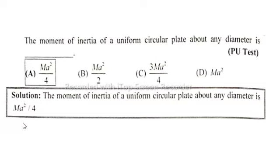Solution: The moment of inertia of a uniform circular plate about any diameter is Ma² over 4. So option A is correct, that is Ma² divided by 4.